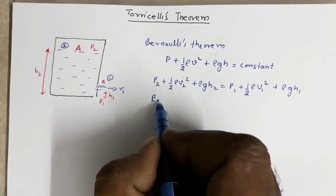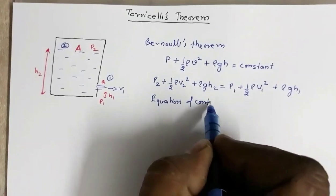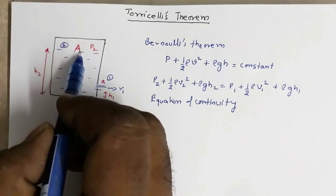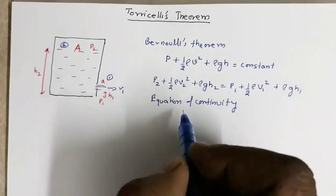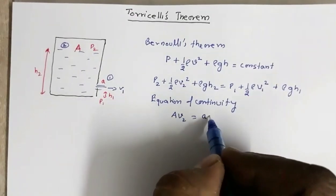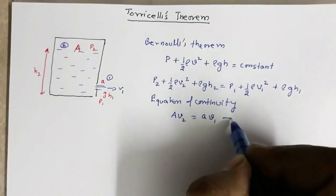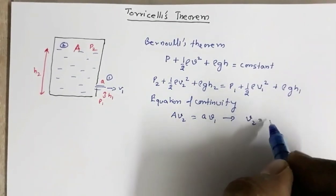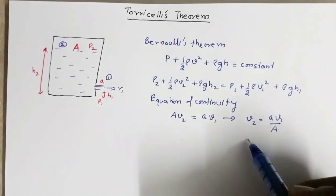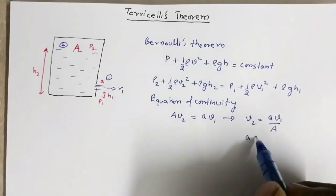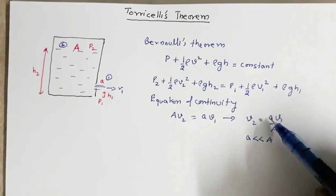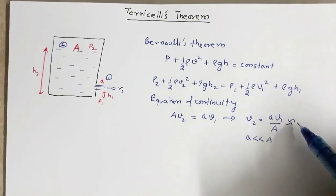From the equation of continuity, for the top surface area capital A with velocity v2, we have capital A into v2 equals small a into v1. Since small a is much smaller than capital A, this quantity will be almost negligible, very small — almost equal to zero.